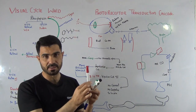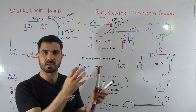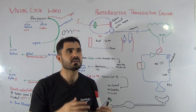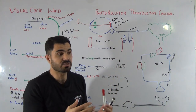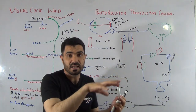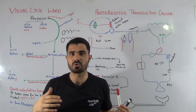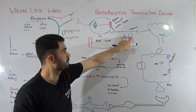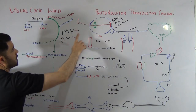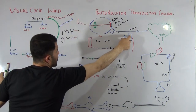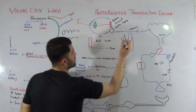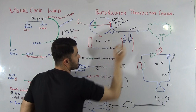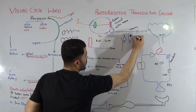Rod cells help you see the margins and outlines of objects, and they allow you to see in the dark. When you enter a room where all the lights are off, you can still see objects — that is because of the rod cells. Inside the rod cell, there is a special protein called rhodopsin.